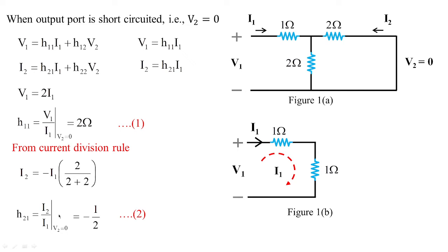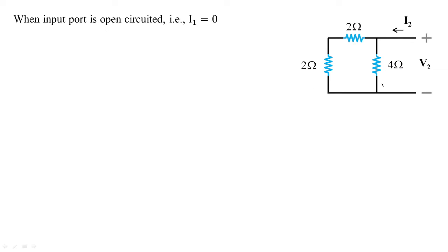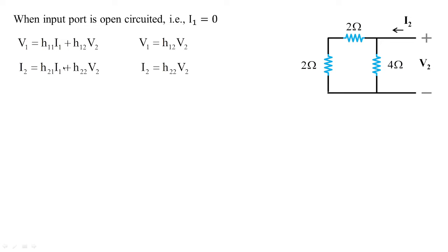Now let us find the remaining parameters by open-circuiting the input port. From Figure 1, when the input port is open-circuited, the element connected to port 1 is removed and we are left with the remaining part of the circuit. With i1 = 0, we get: v1 = h12·v2 and i2 = h22·v2.